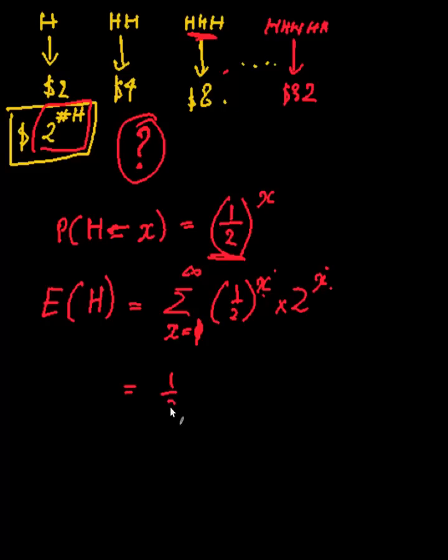So if I write this out, basically what I'm going to get is something like this: half times two plus a quarter times four plus an eighth times eight, and so on. So basically I have one plus one plus one. That's an infinite amount of that. So this is equal to infinity.